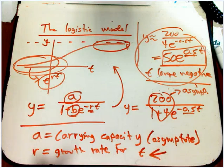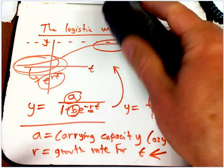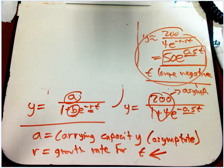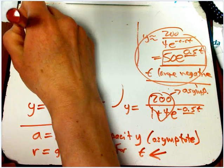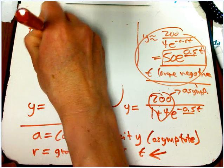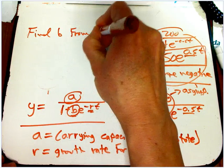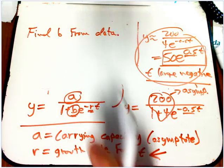Now, the b here, it's not as easy to give a nice significance to the b. And, what I'll just say is that we usually are going to find b from the data, from at least, like, one data point.